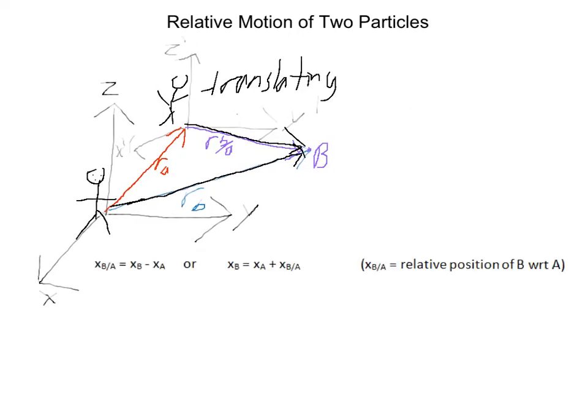And so x sub b with respect to a equals x sub b minus x sub a. As you can see, r sub b or x sub b minus r sub a, x sub b, equals r sub b with respect to a. Or you can rearrange it. And so x sub b with respect to a is the relative position of b with respect to a.